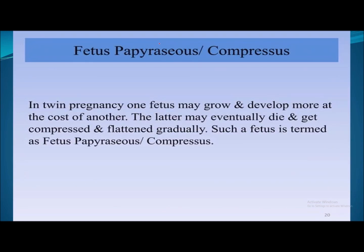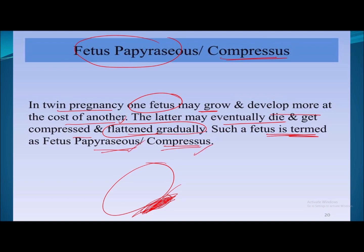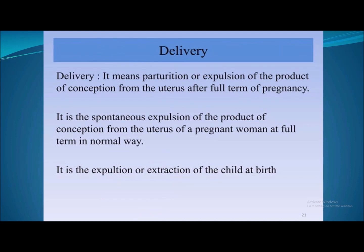Fetal papyraceous, also called fetus compressus, is a type of twin pregnancy in which one fetus grows or develops more at the cost of the other. The less-developed fetus may eventually die and become compressed or flattened, turning into a papery thin structure — this is known as fetal papyraceous or fetus compressus.